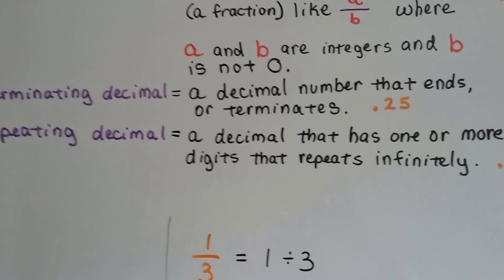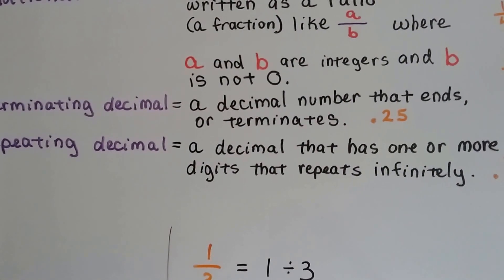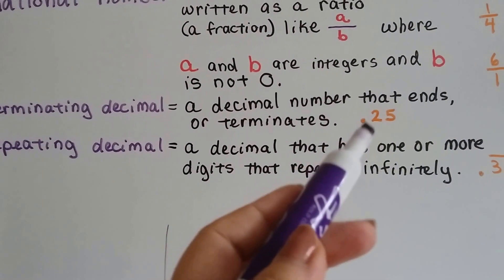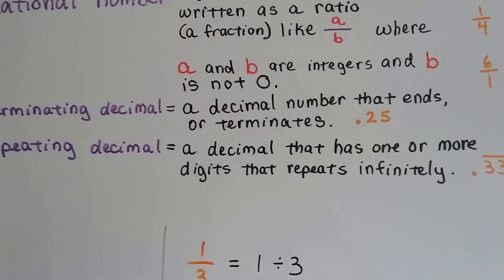A terminating decimal is a decimal number that ends or terminates. 0.25 ends. That's it. 5 is the last digit for that decimal.